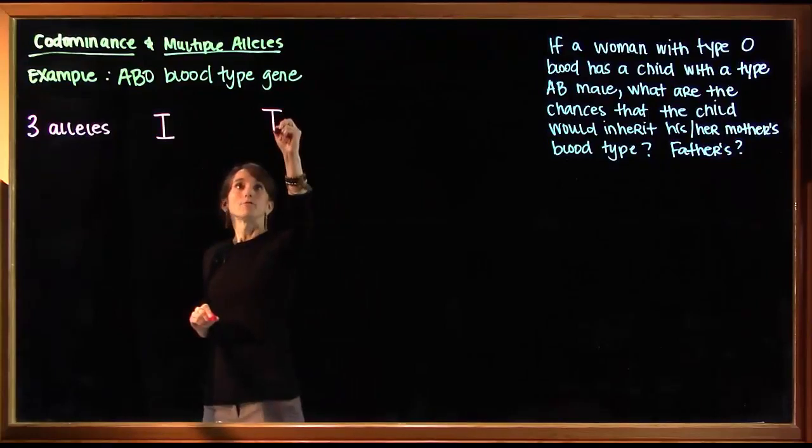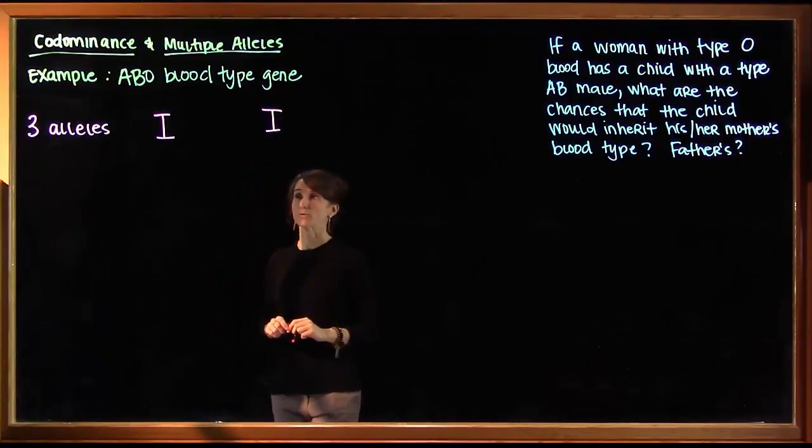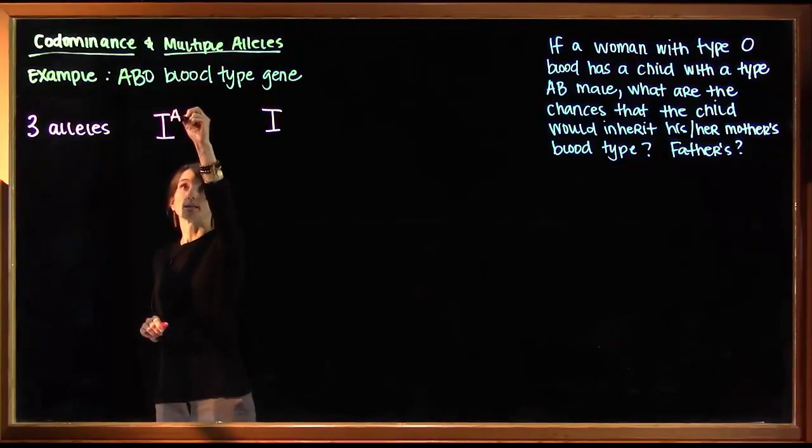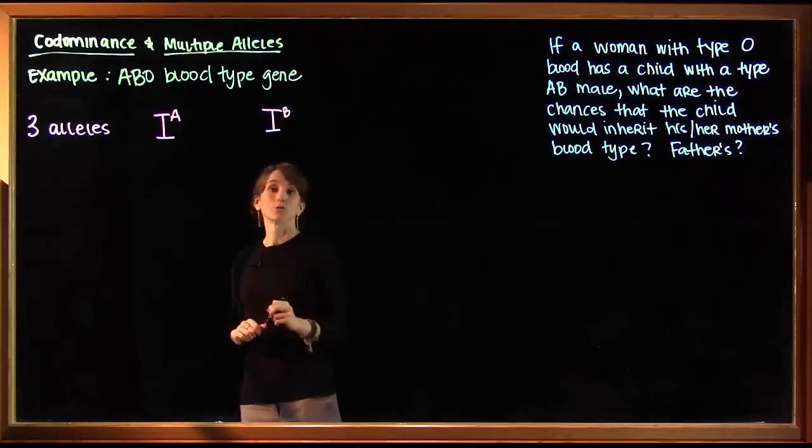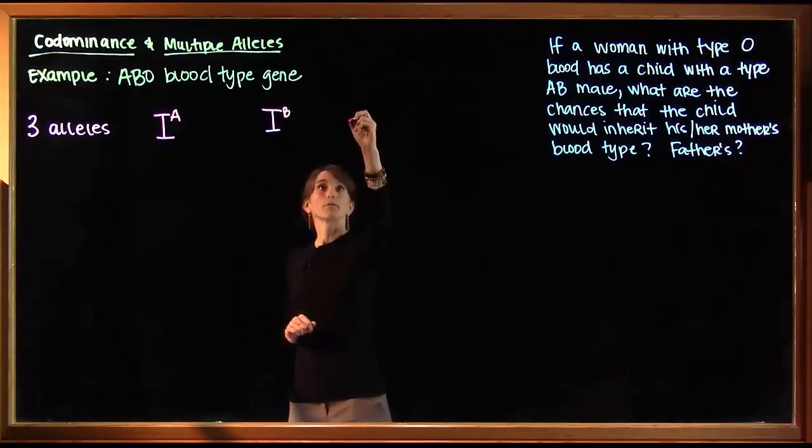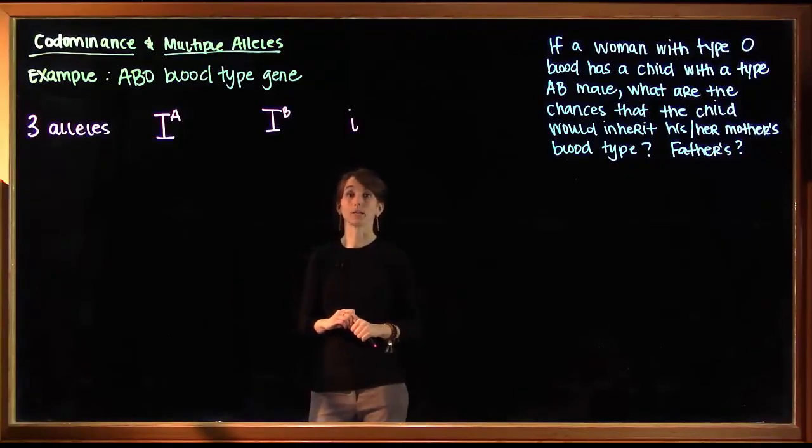But since we have two of them, we need a way to differentiate. And to do that, we're going to use superscripts. So our first big I is going to get a superscript A. Our second one is going to get a superscript B. And our third allele is the recessive allele, so that one will get a little letter, a little i.